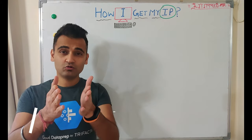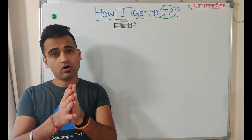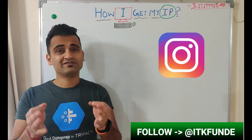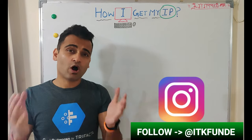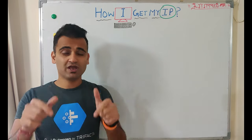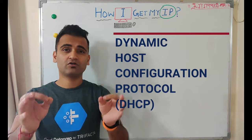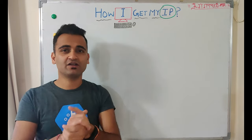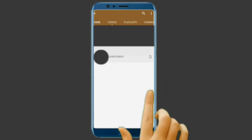Hello friends, welcome to ITK Funday, your own channel where we make it interesting for everyone. In this video we will understand how a computer gets its IP address on the network. The IP address is the unique identity for any network device to be identified over the network. Today we will understand about DHCP — Dynamic Host Configuration Protocol — and how this protocol helps a computer or any network device get its identity over the network.